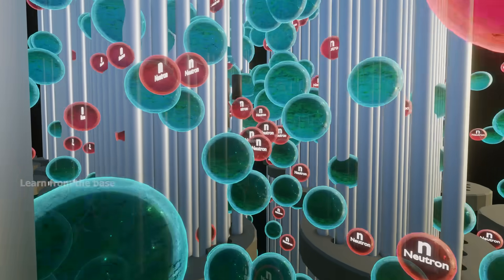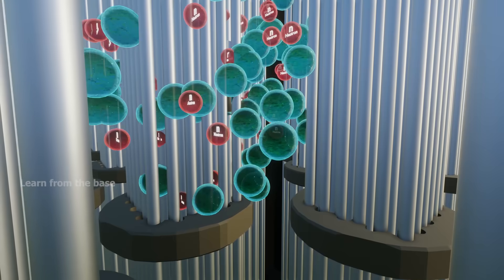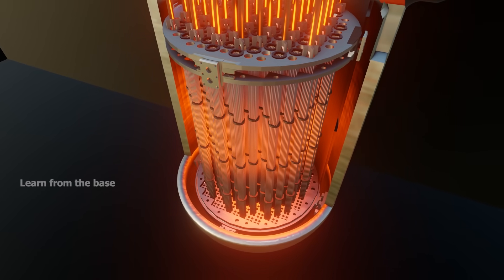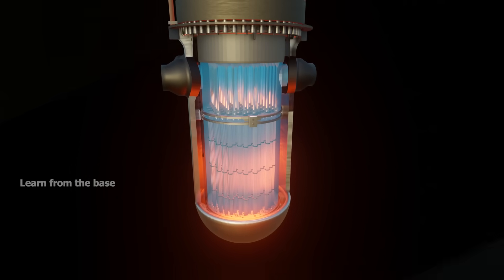These neutrons are free to split other fissile nuclei, thus maintaining a chain reaction which produces a high level of heat within these fuel tubes. These tubes then transfer heat to the primary circuit water simply by contact.